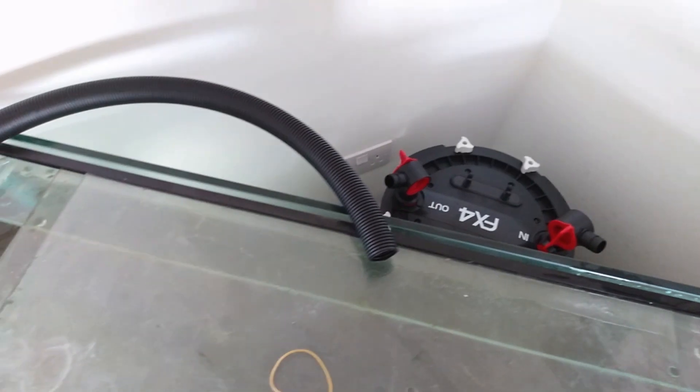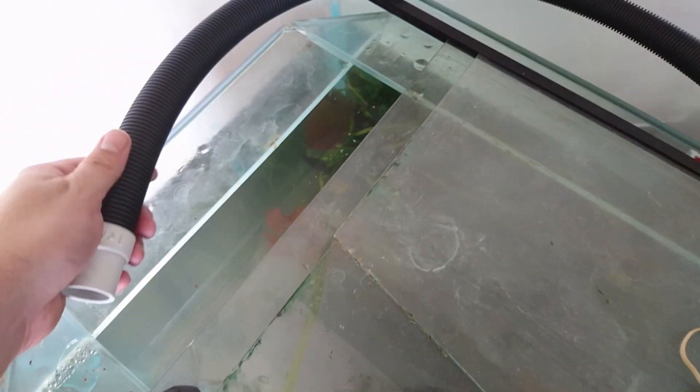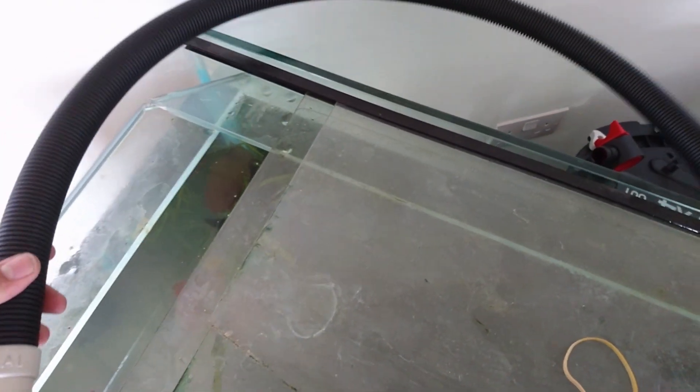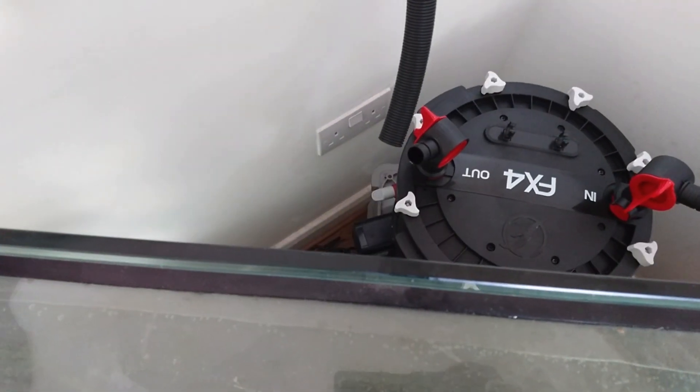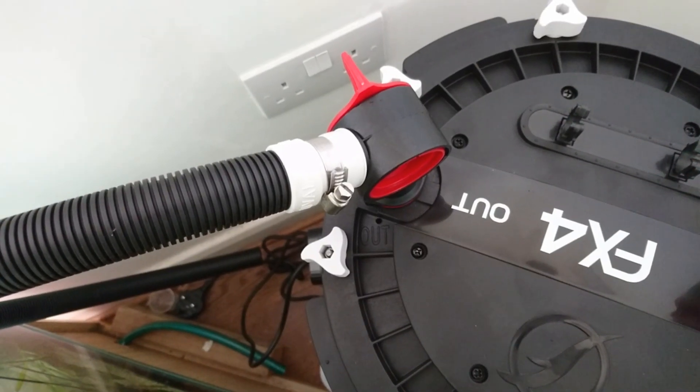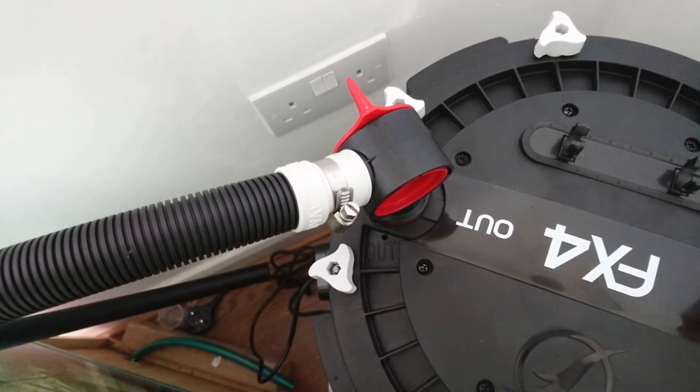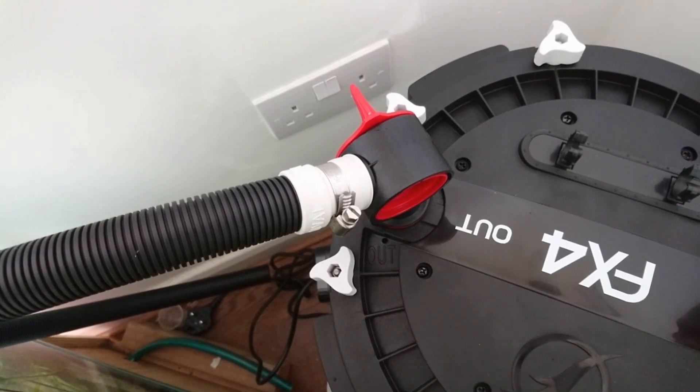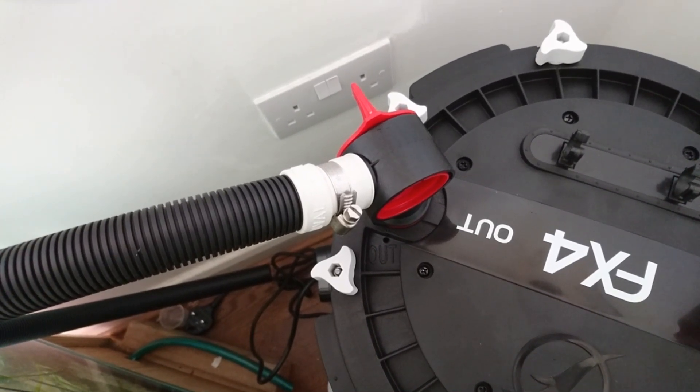The next thing to do will be to connect your hosing. Now when measuring the hosing, it needs to be a straight line from there to your point. You don't want it to be overly long so that you get loops in your pipe work like that. When fitting the pipes, use the metal hose clips provided. These will stop the hosing from popping off accidentally.